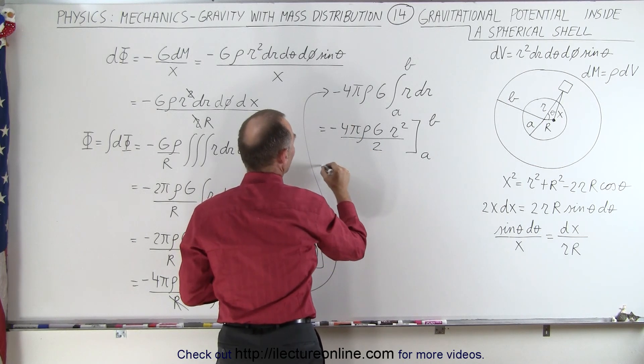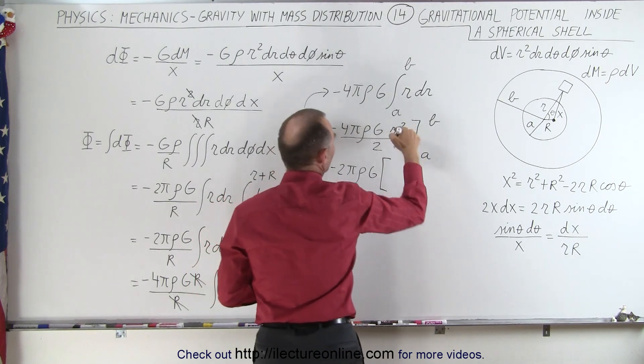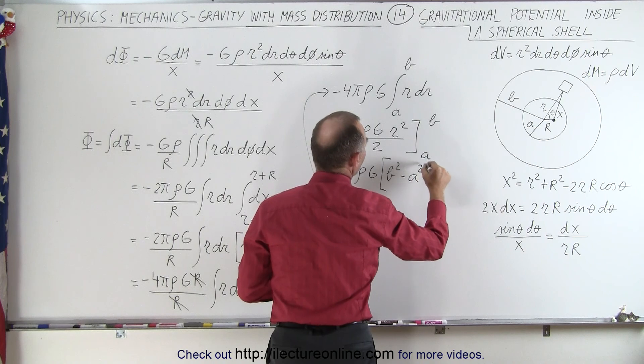And the 2 and the 4 cancel out, so this becomes minus 2 pi density g times, we plug in the upper limit, we get b squared. Plug in the lower limit, we get minus a squared.